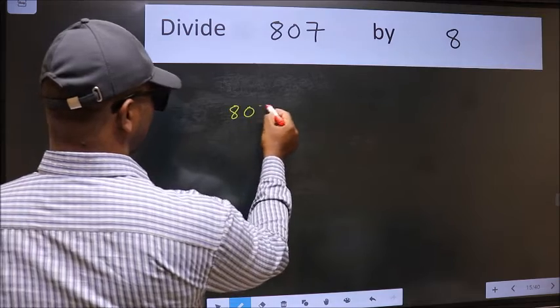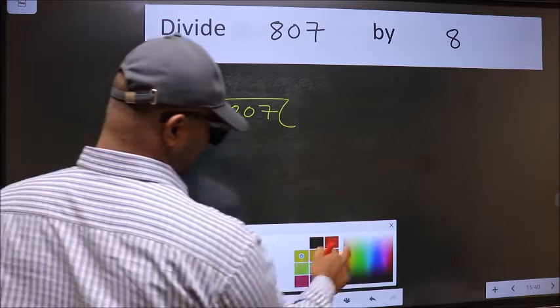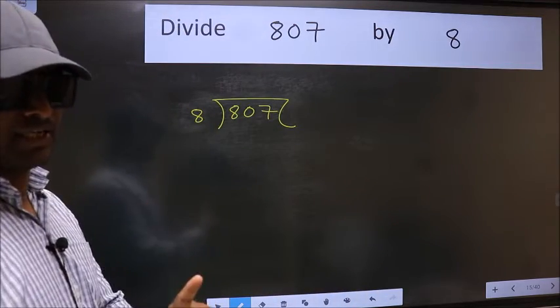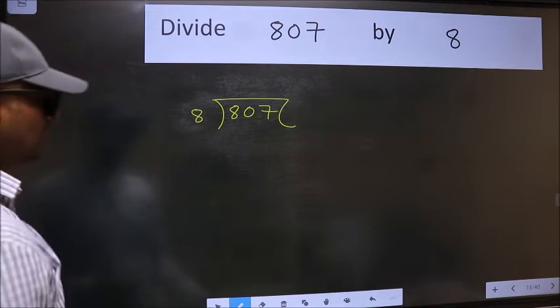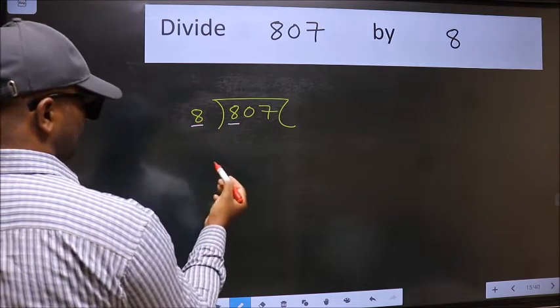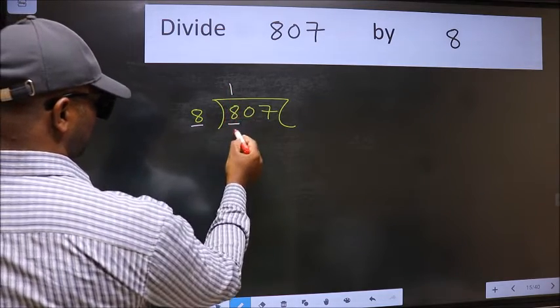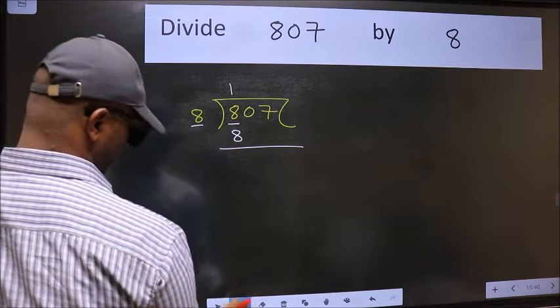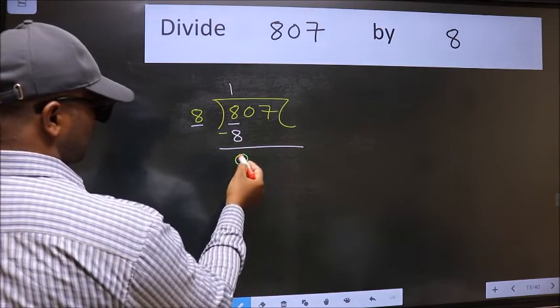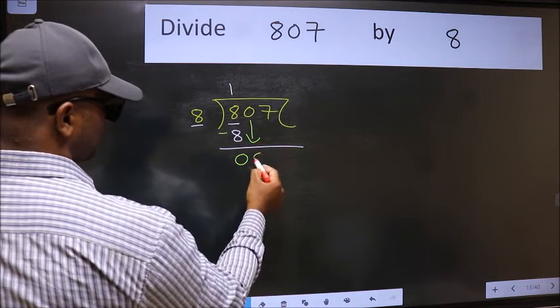807 and 8 here. This is your step 1. Next, here we have 8 and here also 8. When do we get 8 in 8 table? 8 once 8. Now we should subtract. We get 0. After this, bring down the beside number. So 0 down.